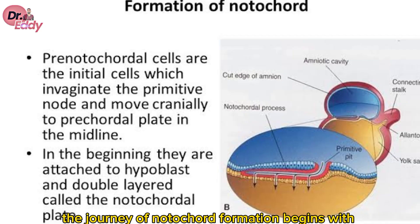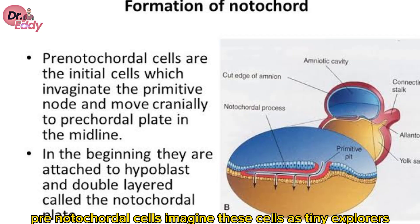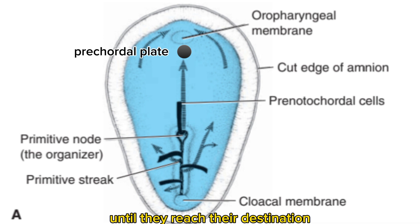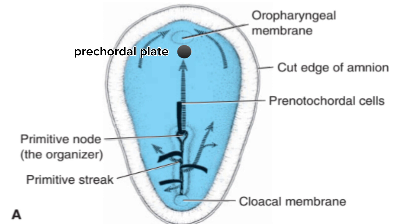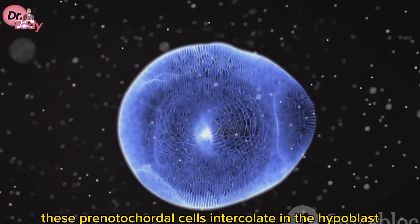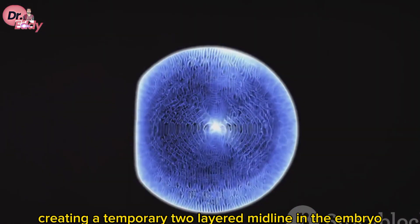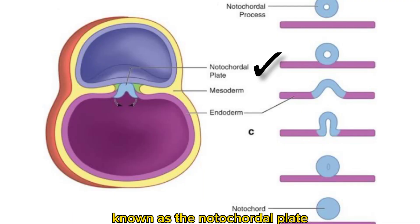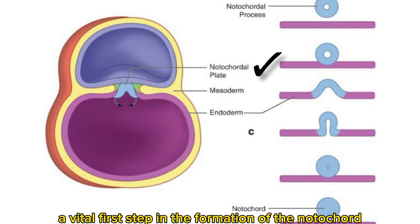The journey of notochord formation begins with pre-notochordal cells. Imagine these cells as tiny explorers, invaginating in the primitive node and journeying forward in the midline until they reach their destination, the pre-cordal plate. These pre-notochordal cells then intercalate in the hypoblast, creating a temporary two-layered midline in the embryo known as the notochordal plate.